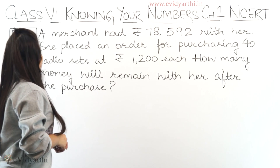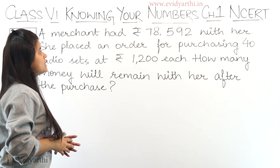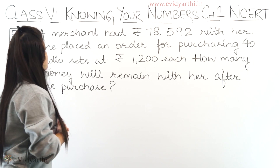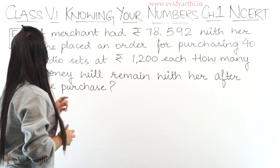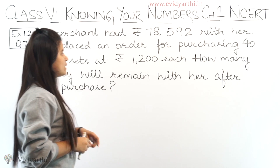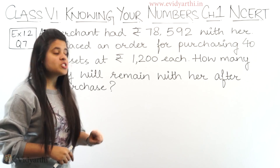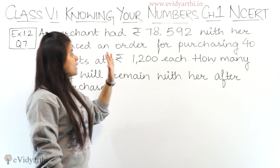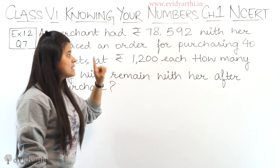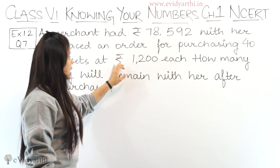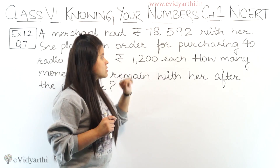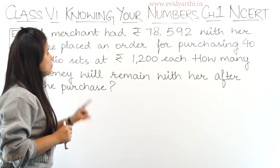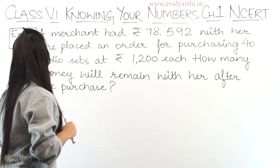So in this question, a merchant had Rs. 78,592 with her. She placed an order for purchasing 40 radio sets at Rs. 1200 each. So a merchant has Rs. 78,592. She placed 40 radio sets, and one radio set costs Rs. 1200. How much money will remain with her after the purchase?